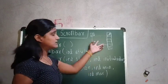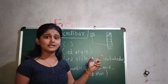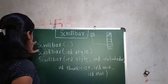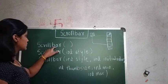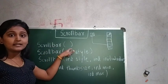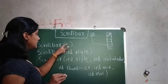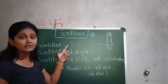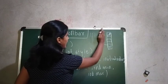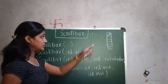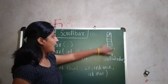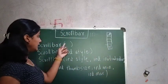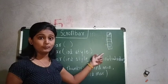We will see the constructors and then we will see its methods one by one. The first constructor is Scrollbar() — it contains an empty constructor with no parameters. By default, it will create a vertical scroll bar.